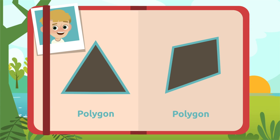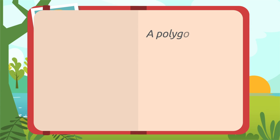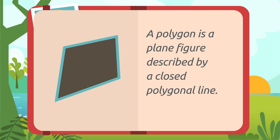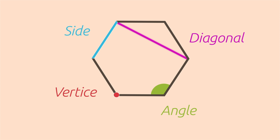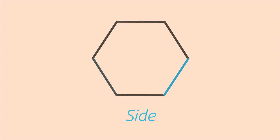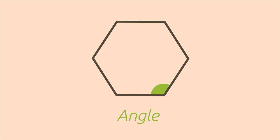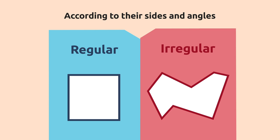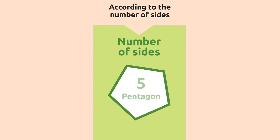Let's recap everything we learned about polygons. They are plane figures described by a closed polygonal line. They are formed by parts: sides, vertices, angles, and diagonals. They can be classified as regular or irregular, and also depending on the number of their sides.